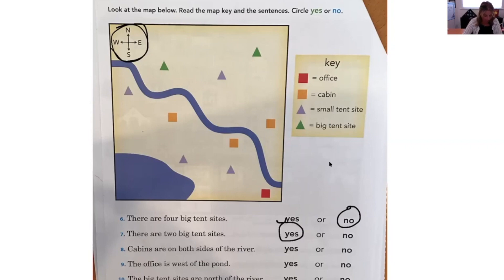Number eight: cabins are on both sides of the river. Do you see the river? And are there cabins — which one is the cabin? The orange square. Is there a cabin on one side of the river and the other side of the river? Yes, there are. So circle yes.